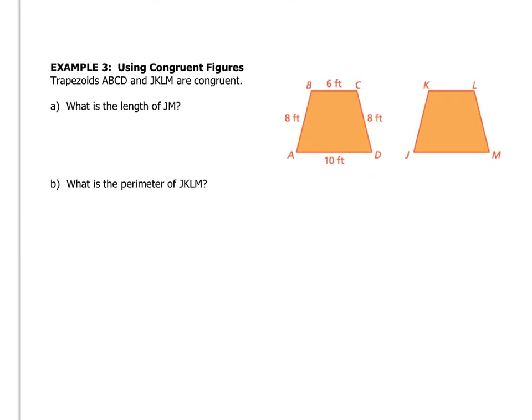Okay, if you want to try example three on your own, go for it. If not, let's do it. They tell us that the two trapezoids are congruent, so they have the same angles and the same sides. What is the length of JM? So you look for JM, and JM is here, and its matching side is AD, so the length of AD must be the same as the length of JM, so that's 10 feet.